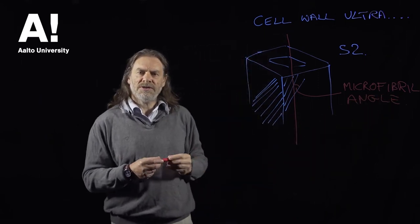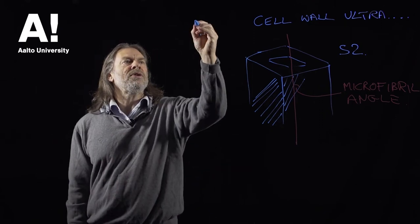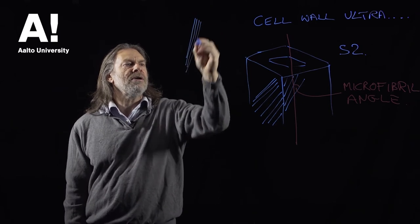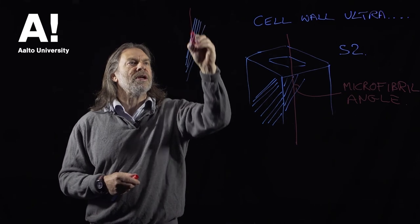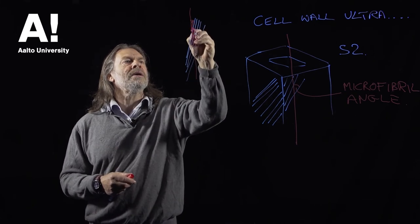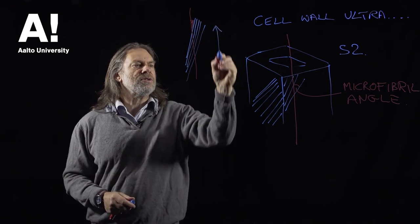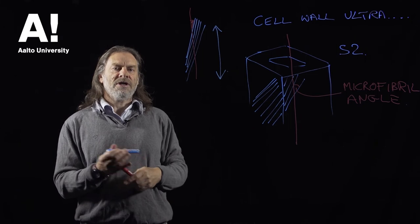And if we remember that the cellulose is very strong in tension, if we have microfibrils that form a very shallow angle with the cell wall axis, so we have a very small microfibril angle here, then the cell wall is going to be extremely strong in tension, very stiff in tension,